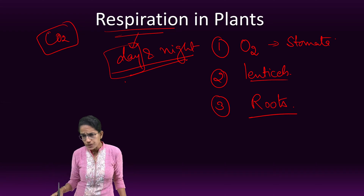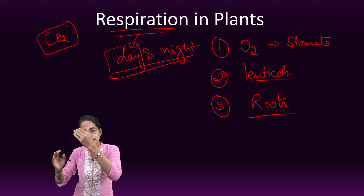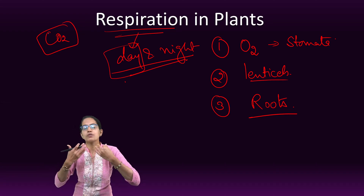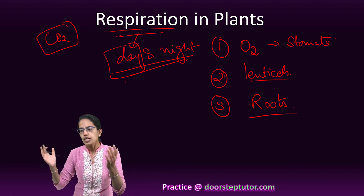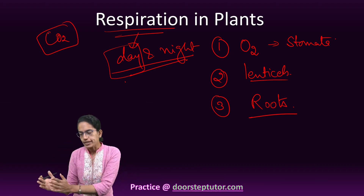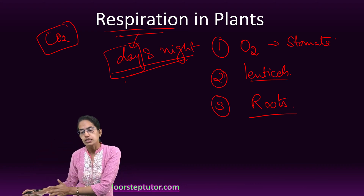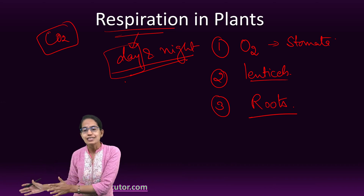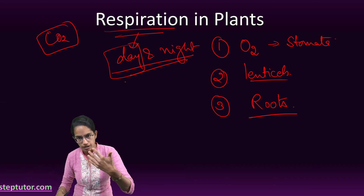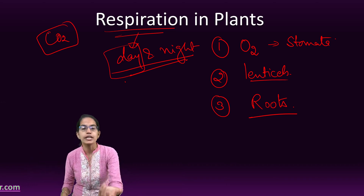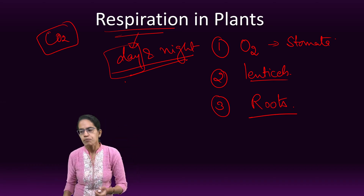During the daytime, the carbon dioxide which is released is again utilized by the plant for the purpose of photosynthesis. Night time is when no photosynthesis occurs, and that is the reason the carbon dioxide released by respiration is not reutilized by the plants again.